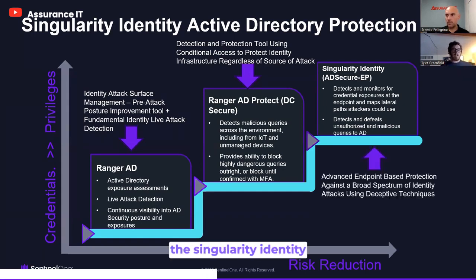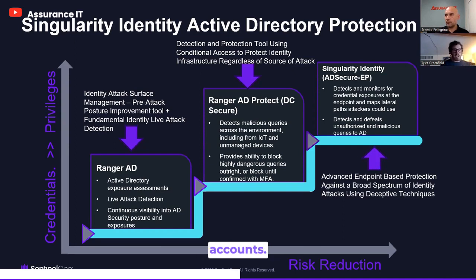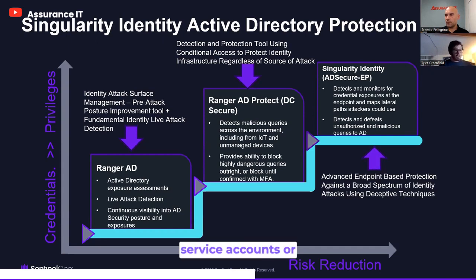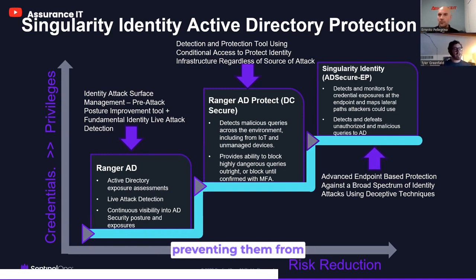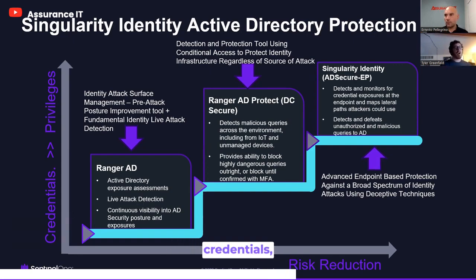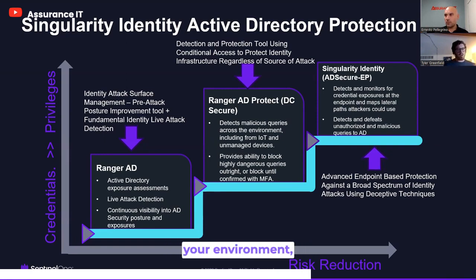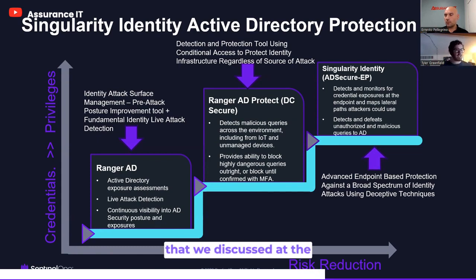The final stage is Singularity Identity for endpoints. This is where we will actually be able to prevent attackers from dumping and stealing credentials, from cracking those accounts. If they try to understand subtle permissions on those delegated service accounts or admin accounts in your environment, we will be able to actually actively lie to them and steer them in a different direction. So not only are we preventing them from getting access to that information about your identity infrastructure and stealing those credentials, we're actively poisoning the information they're trying to gather about your environment — so that they can't actually progress through that entire identity attack chain.